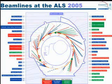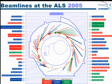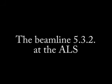At the ALS, there are 42 beamlines in which people are doing experiments in very different fields such as physics, biology, environment, medicine and geophysics. Now I will show you how the experimental station of a beamline looks like.